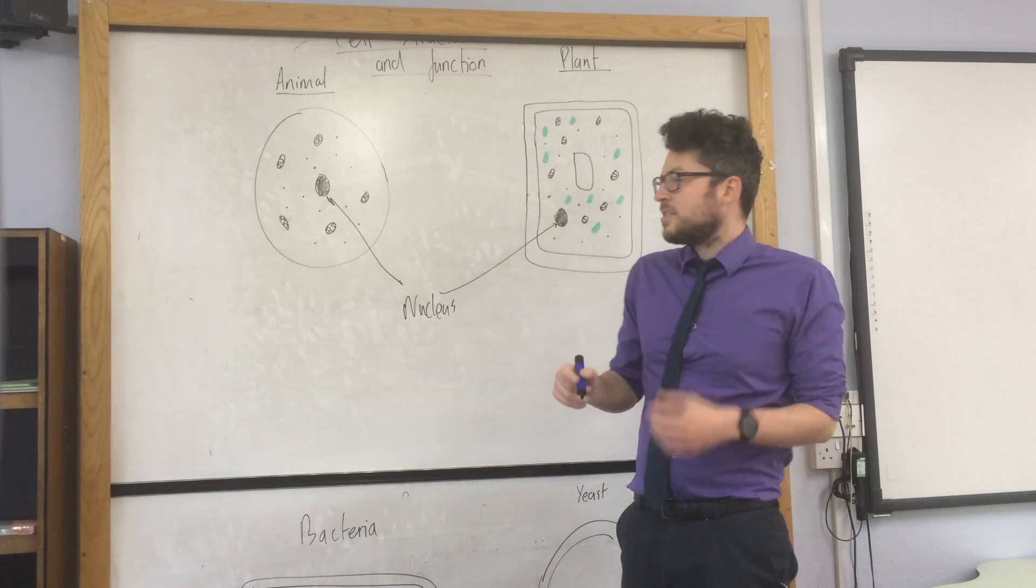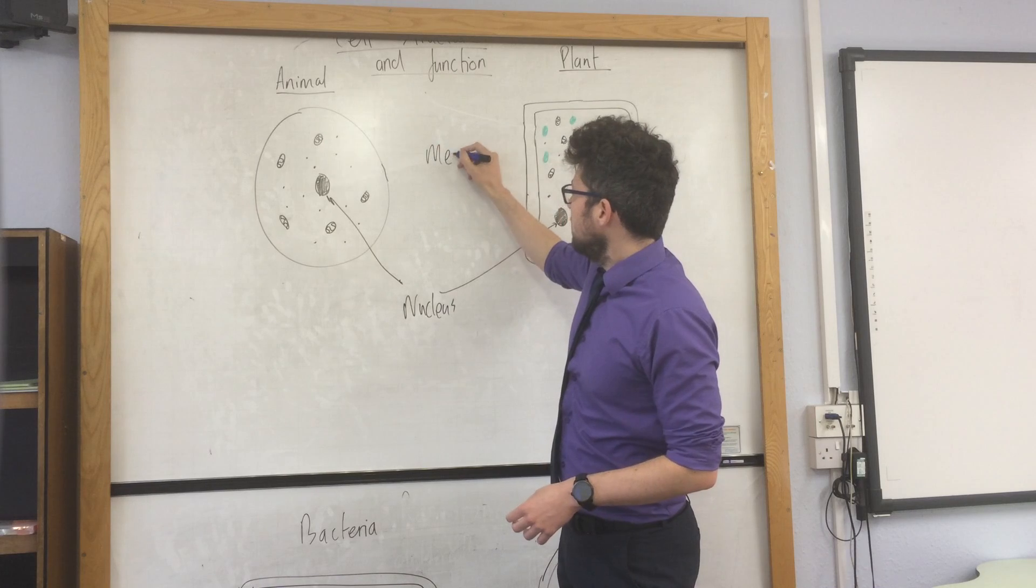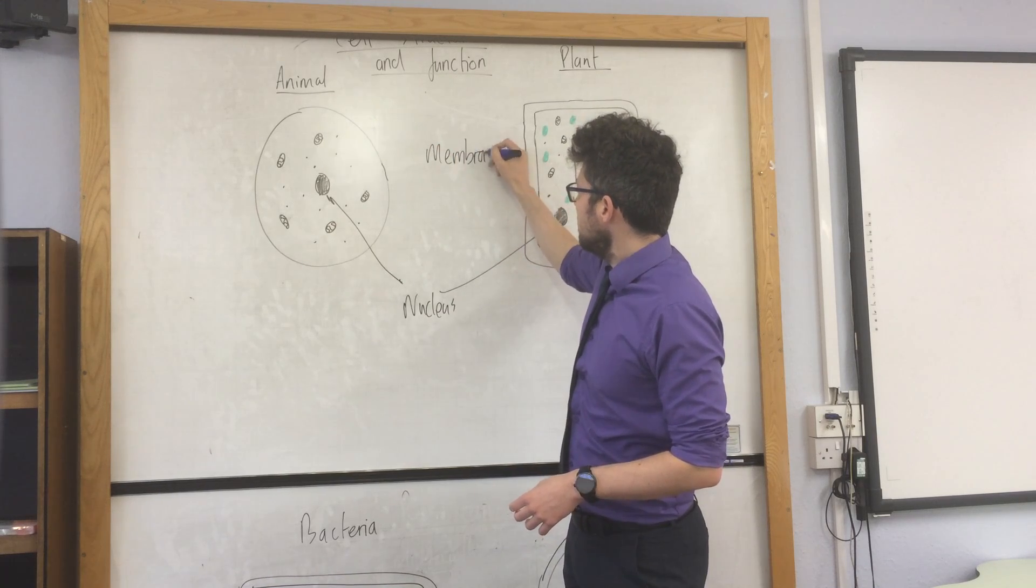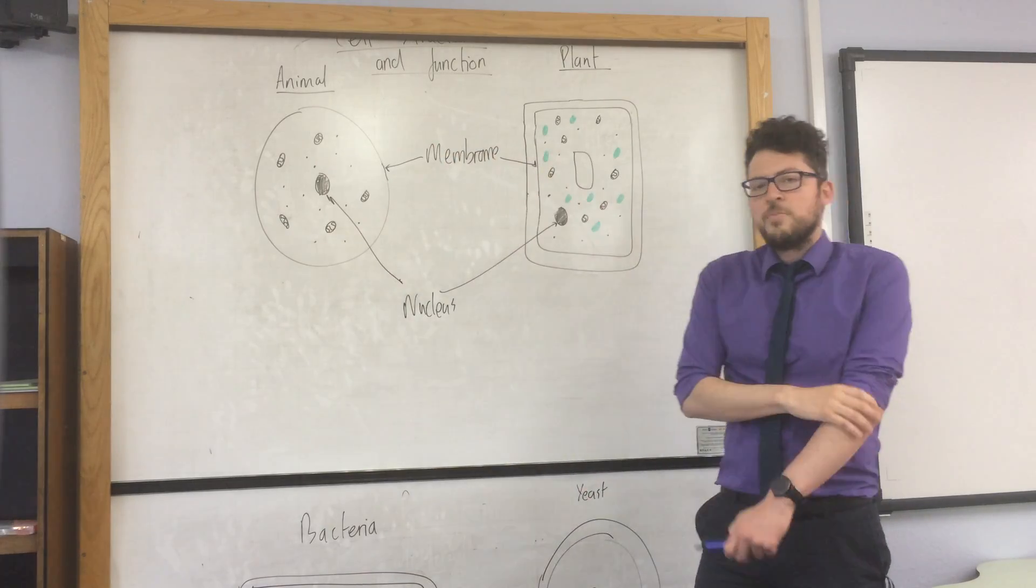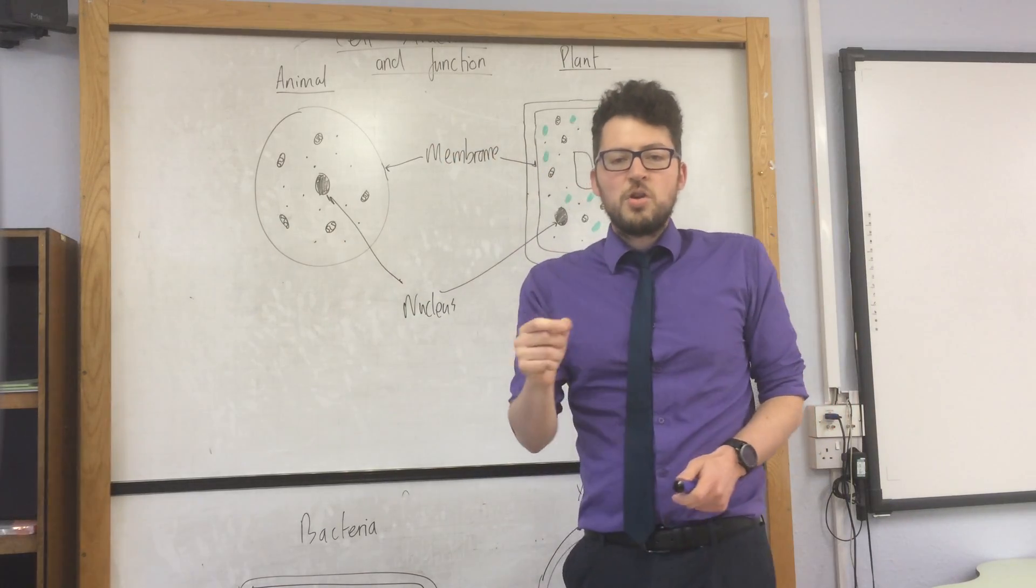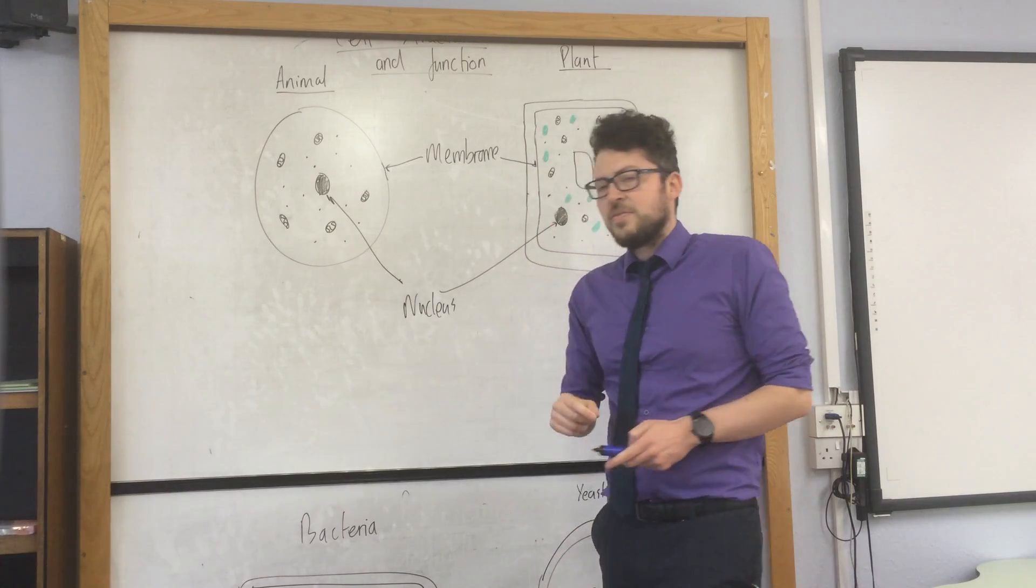In addition to that, both have a cell membrane. The outer part of the cell is the cell membrane. The function of that is to control what goes in and out of the cell.